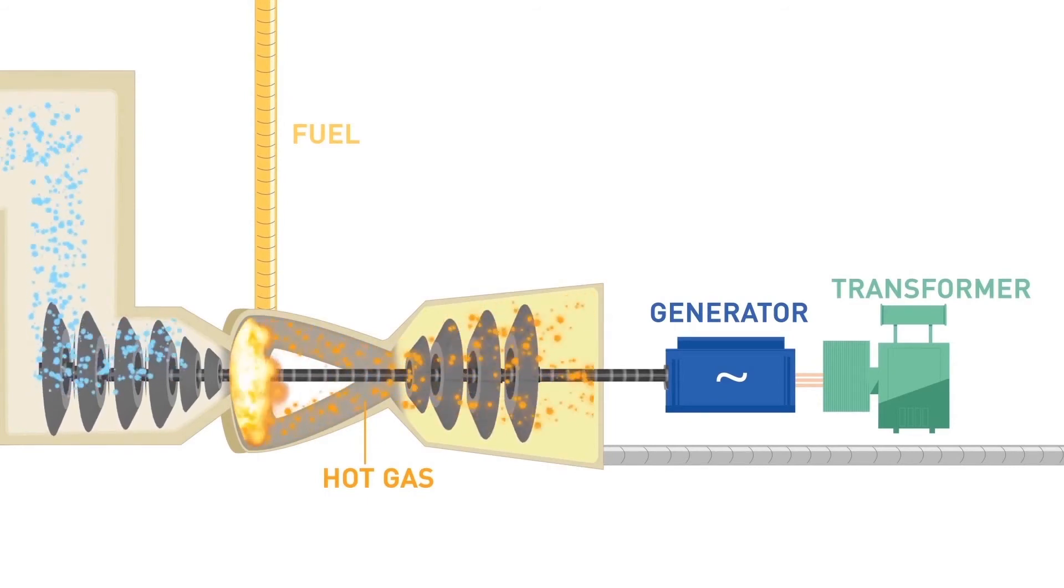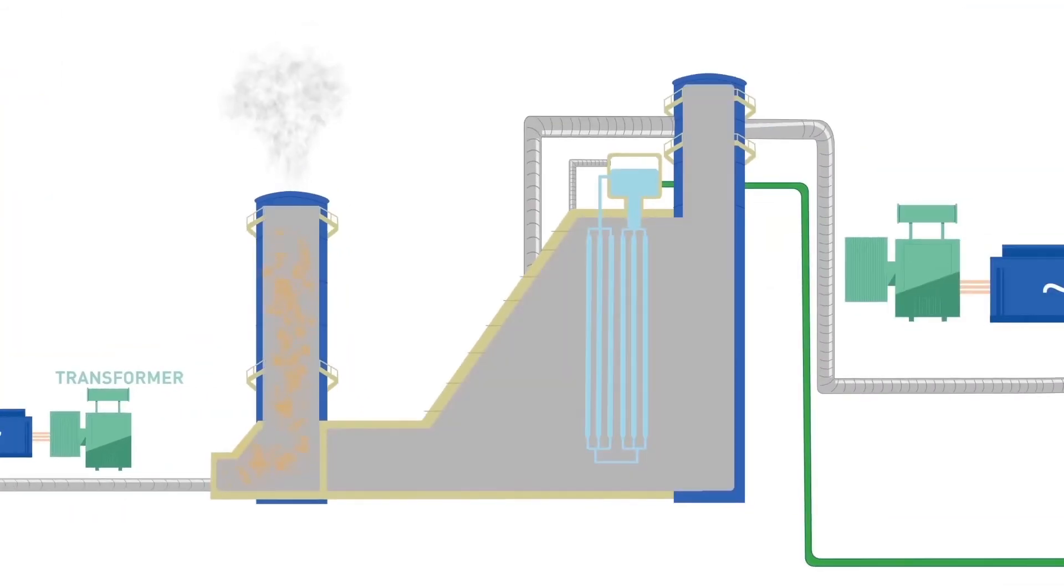In simple cycle operation, the exhaust gas from the gas turbine is expelled into the atmosphere. However, to maximize efficiency, this waste heat is diverted via a diverter damper to a heat recovery steam generator (HRSG), which is essentially a boiler responsible for converting demineralized water into steam.